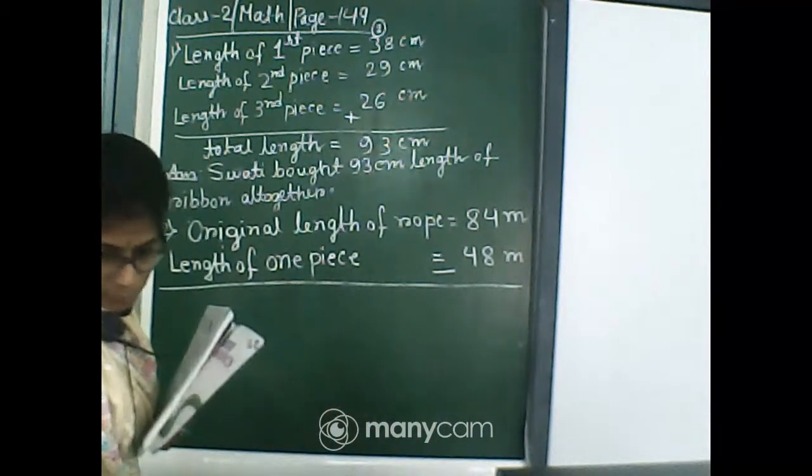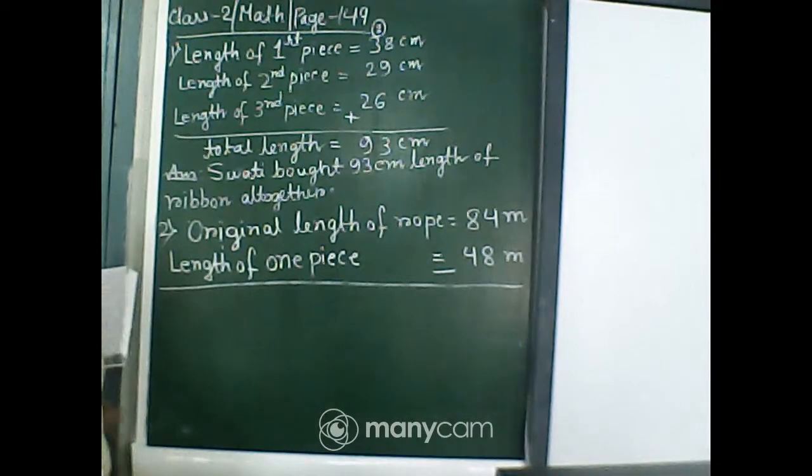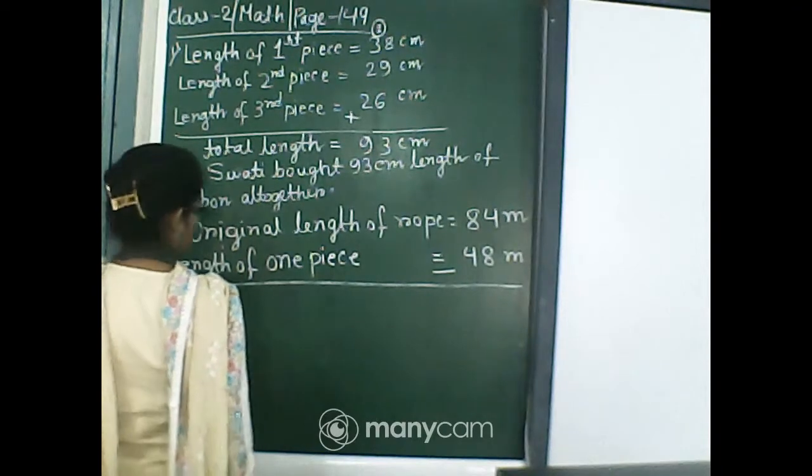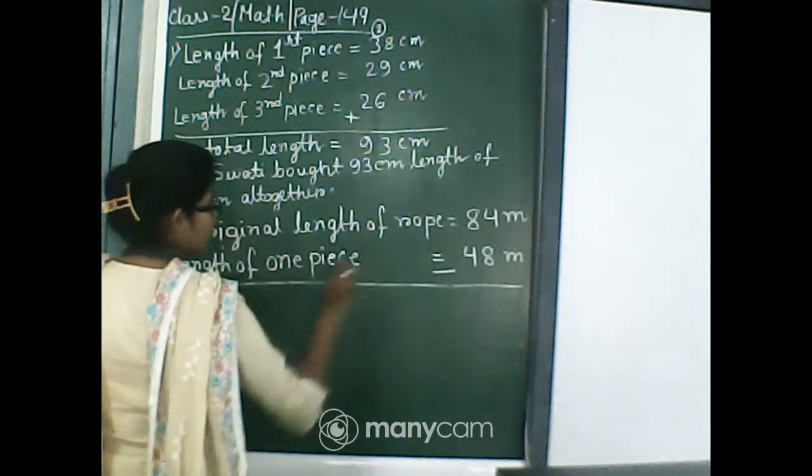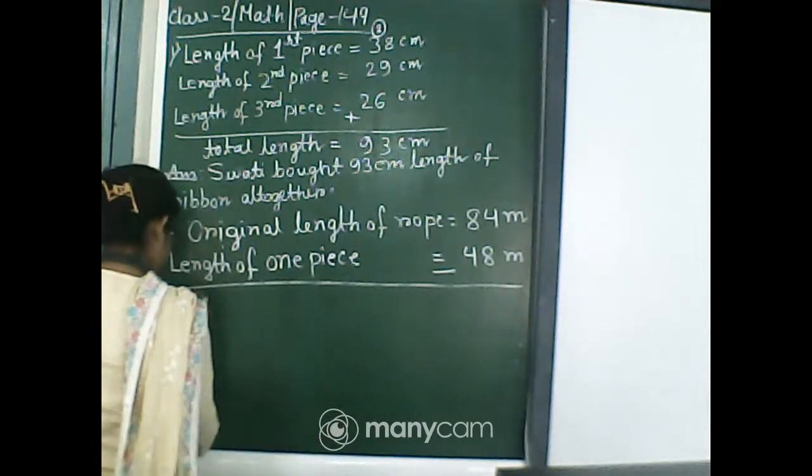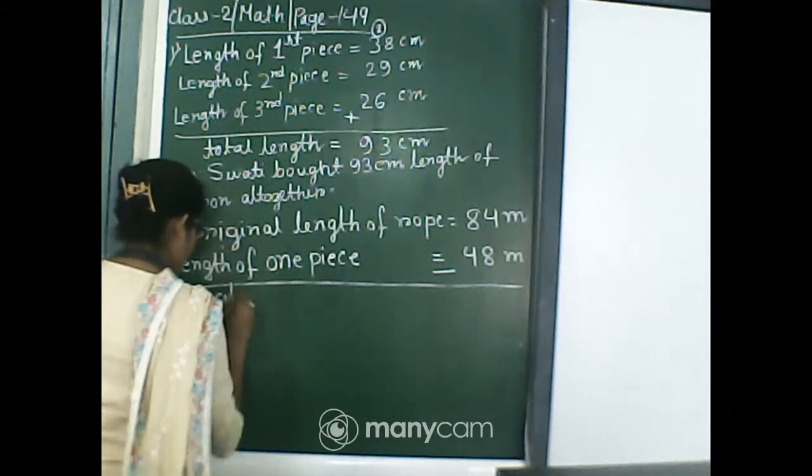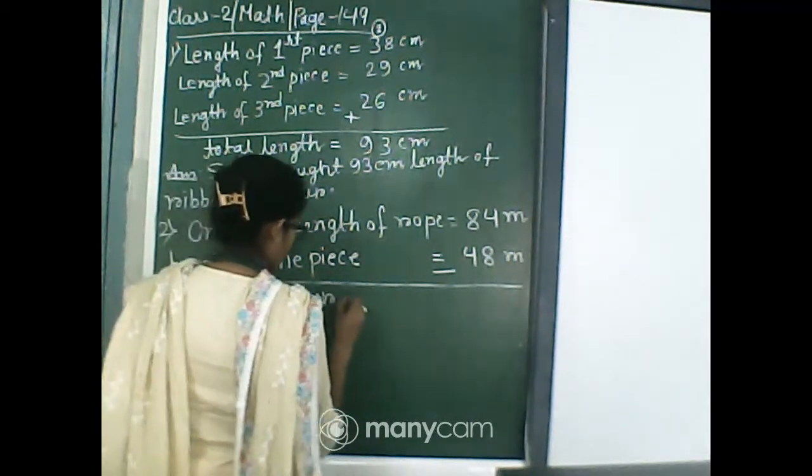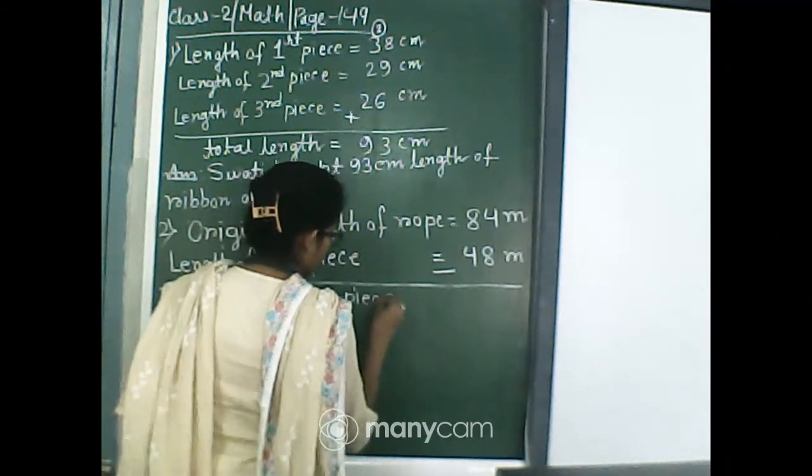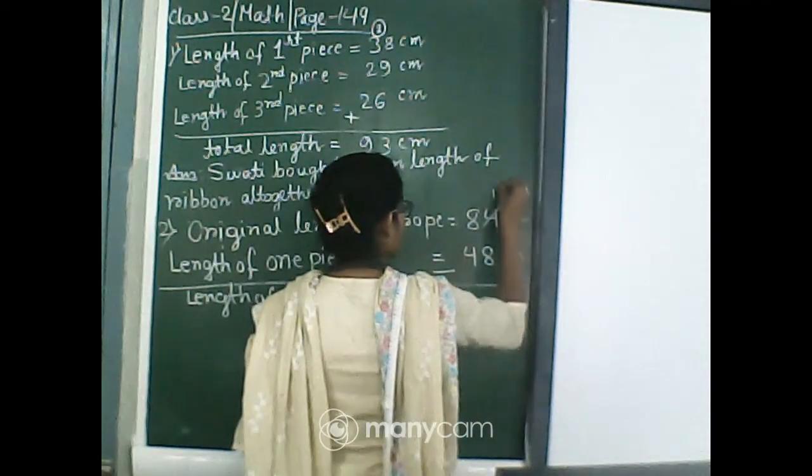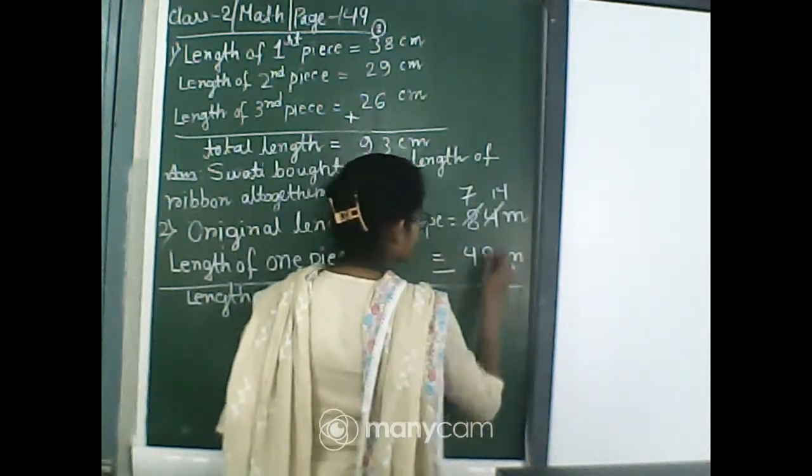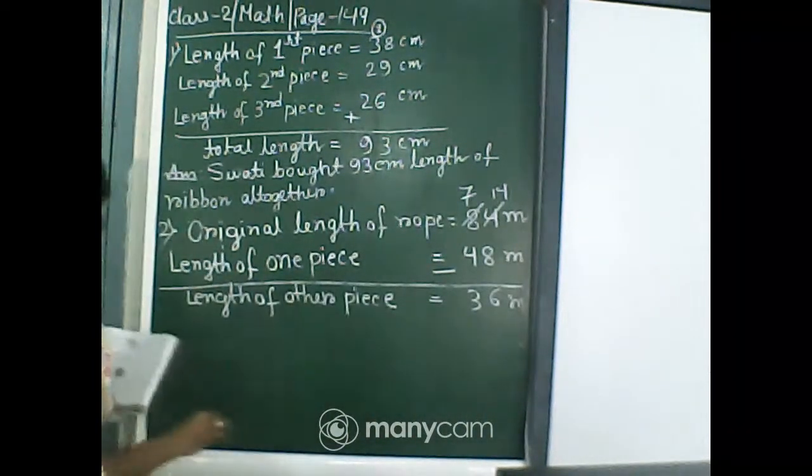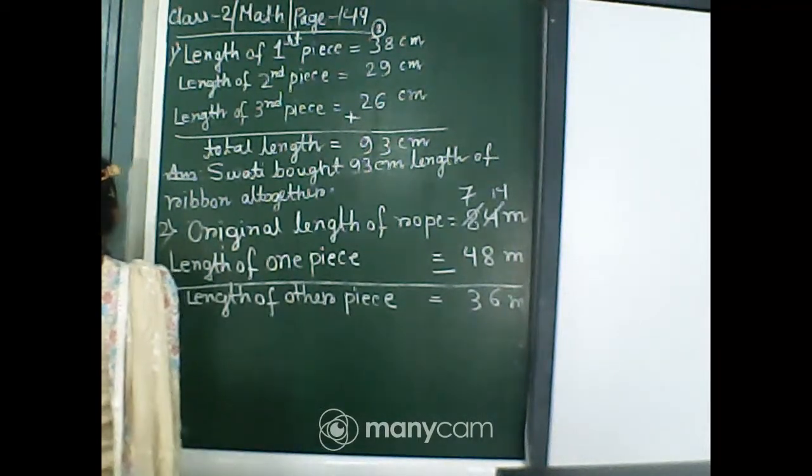Now whenever we will subtract we will get the another part. Then we can say length of the other piece. This 4 will become 14, and this 8 will become 7. So it's 36 meter. So the answer will be: what is the length of the other piece?